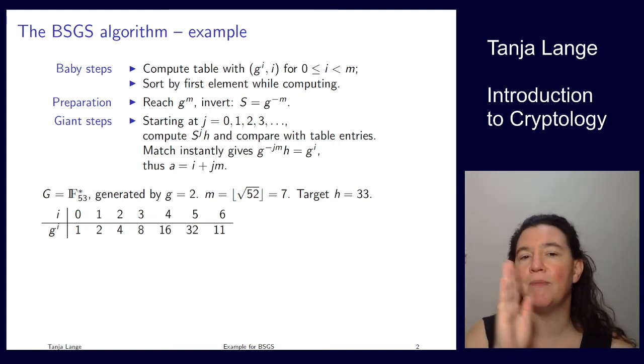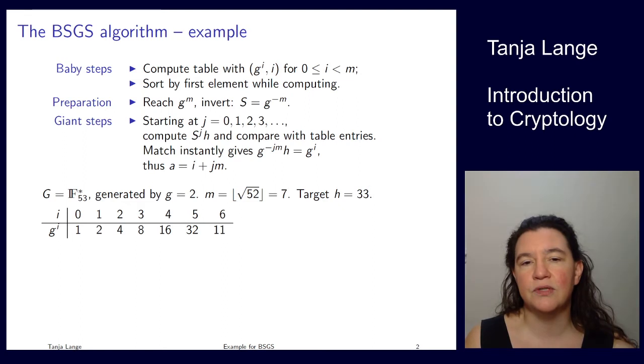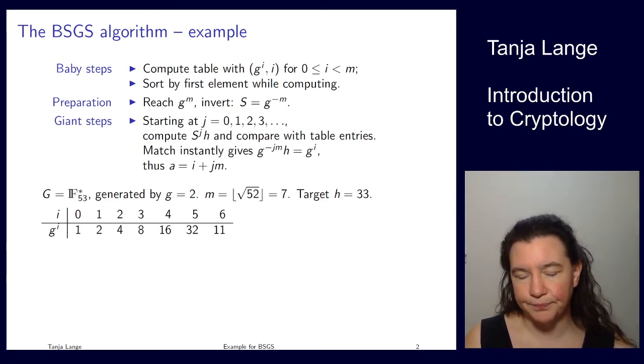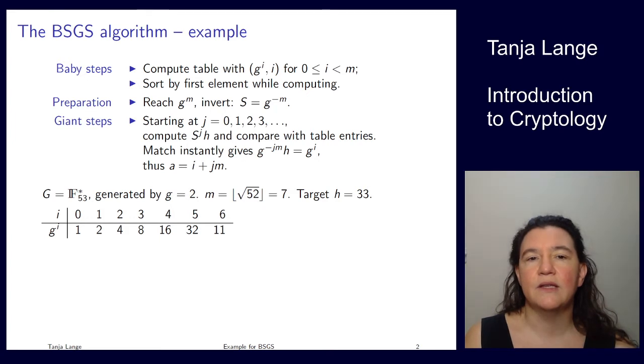Then I get to 6, and I'm taking 32 times 2, that's 64, and that's 11 larger than 53, so we get 11 mod 53. The next step is reaching g to the m minus 1, and I have to reach g to the m.